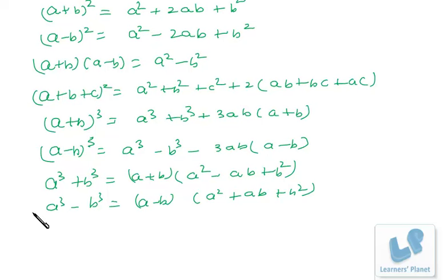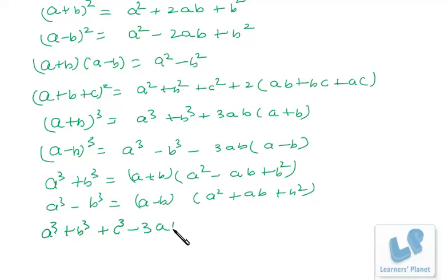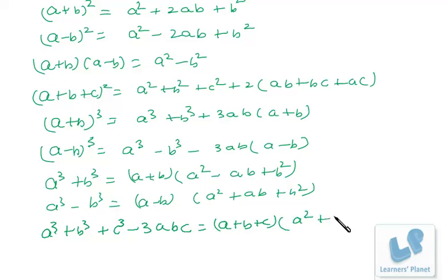One very important identity is: a³ + b³ + c³ - 3abc = (a + b + c)(a² + b² + c² - ab - bc - ac).